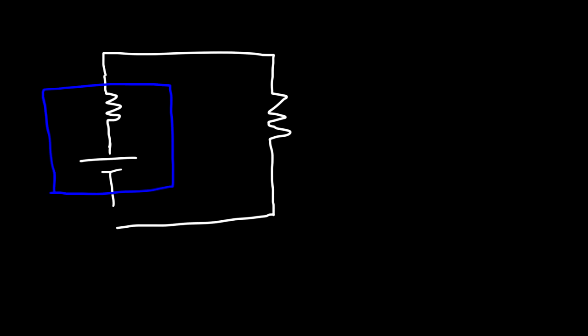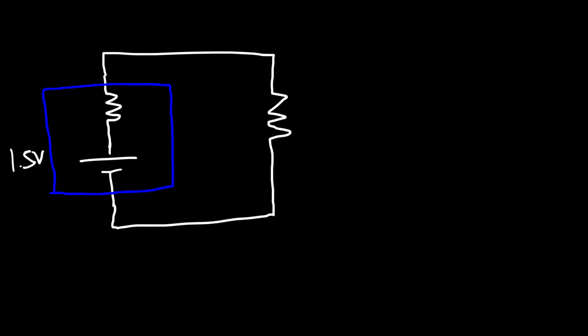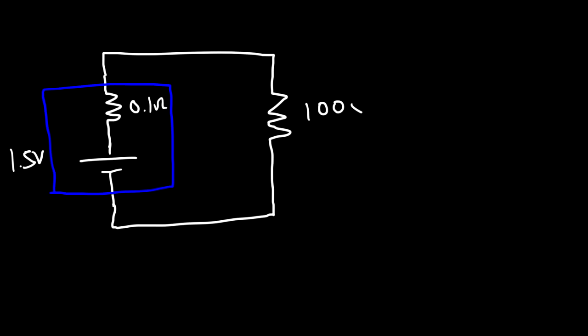Let's work through an example. Here's the symbol for the battery with its internal resistance — the whole battery is boxed in blue — connected across a load resistor. Let's say we have a 1.5-volt battery (that's the EMF), with an internal resistance of 0.1 ohms. We'll vary the load resistor starting at 100 ohms, then 10 ohms, then 1 ohm, and calculate the terminal voltage across the terminals each time.